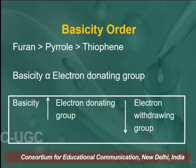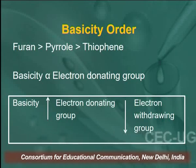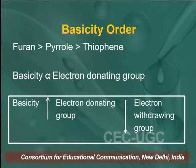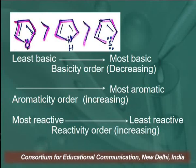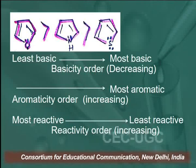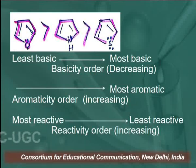Basicity is also proportional to the electron-donating tendency. If a compound has an electron-donating group, it will be more basic. If it has an electron-withdrawing group, it will be less basic. In terms of aromaticity order, thiophene is the most aromatic. In terms of reactivity order, furan is the most reactive, then pyrrole, then thiophene towards electrophilic substitution reactions.